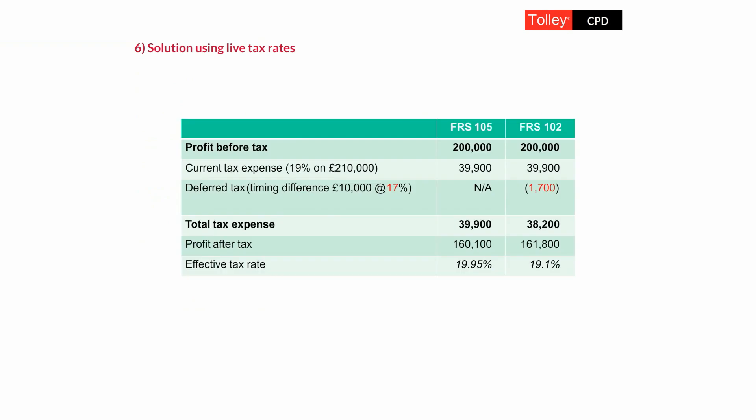Taking the previous example but applying live tax rates: the current tax rate is still 19% for the year-end March 2020. But because we expect the timing difference of £10,000 of pension costs to reverse in the following period — year-end March 2021 — we know the tax rate should be 17% for that period. So we book deferred tax at 17%, giving a deferred tax asset and credit to P&L of only £1,700. Under FRS 102, the total tax expense is now £38,200, giving an effective rate of 19.1%.